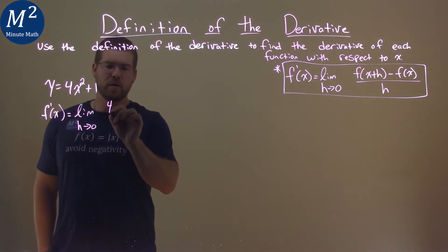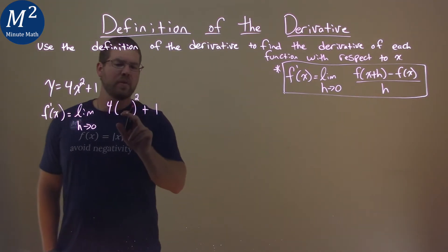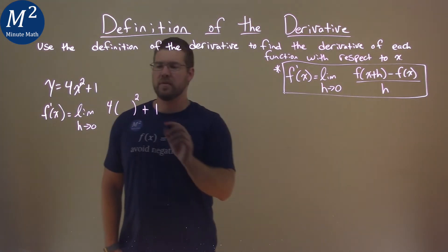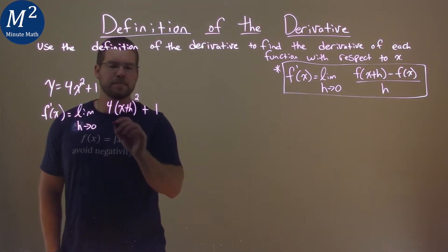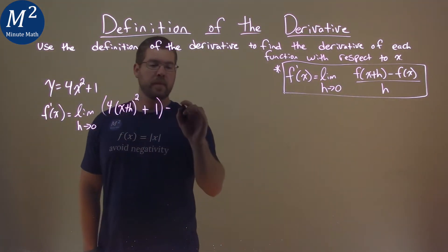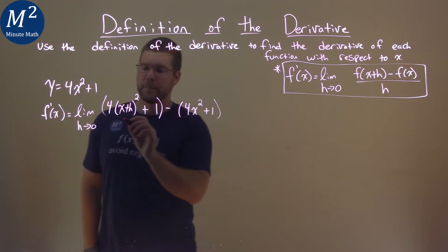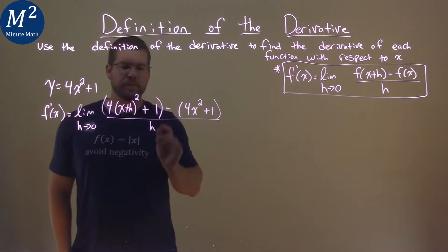In the parentheses we're going to put the x plus h in instead of our x value, x plus h. Then we're going to subtract that by our original function, 4x squared plus 1, and all that's going to be over h.